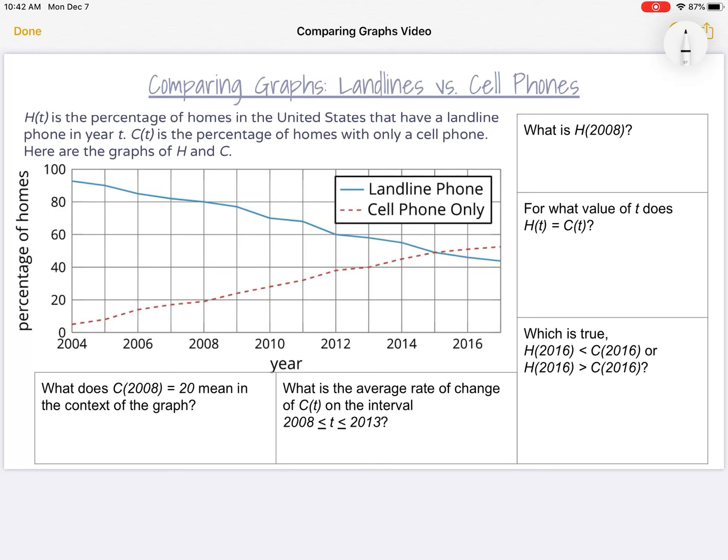In this scenario, we are looking at a graph that is comparing the usage of landlines versus cell phones. The description tells us H(t) is the percentage of homes in the United States that have a landline phone in year t. C(t) is the percentage of homes with only a cell phone. Here are the graphs of H and C.